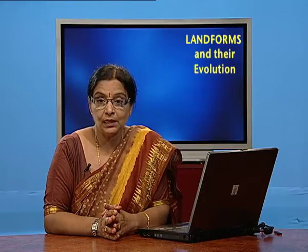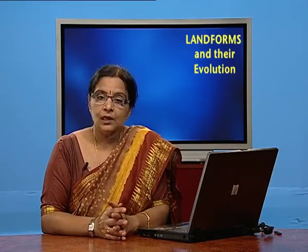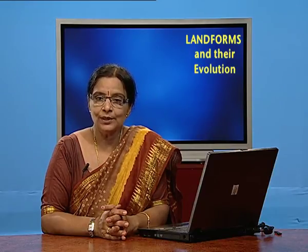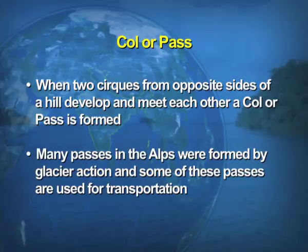There is also the moraine feature, which we'll discuss under depositional features. The next feature is col, also known as a pass. When two cirques from opposite sides of a hill develop and meet each other, a pass is formed. Many passes in the Alps — a mountain in Europe — were formed by glacier action and some are used for transportation. A pass is a low-lying area in the mountain through which you can cross over the mountain.